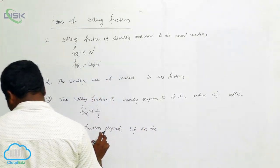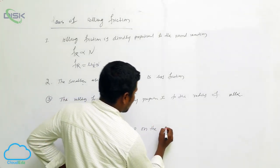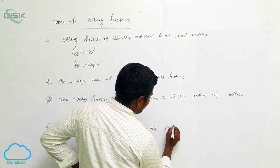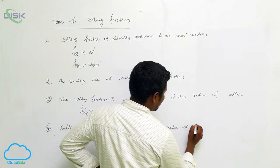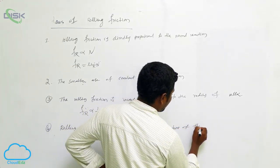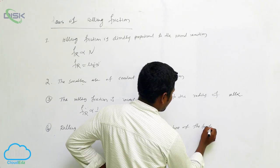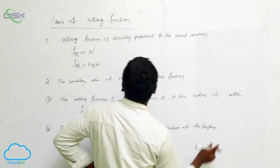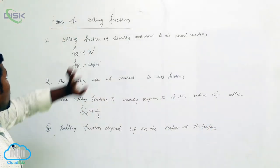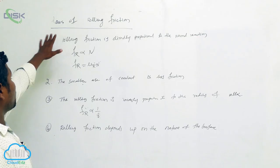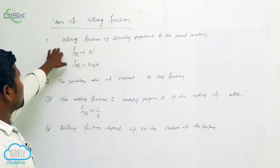The fourth law: rolling friction depends upon the nature of the surface. These are the main laws of rolling friction.